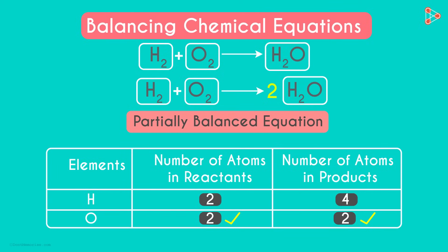The number of hydrogen atoms on the right became 4. And what's the number of hydrogen atoms on the left? It's 2. So how do you think we can balance the hydrogen atoms now?